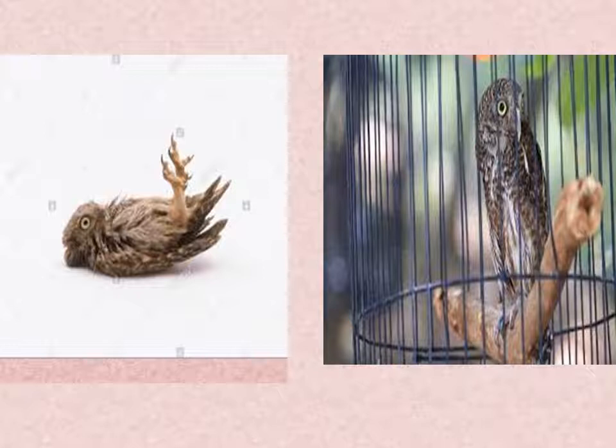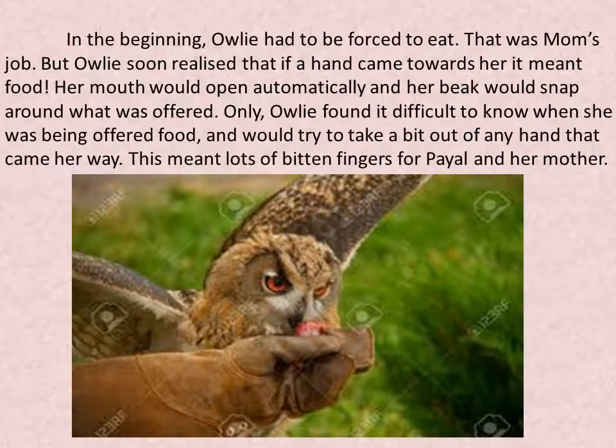In the beginning, Owly had to be forced to eat — that was mom's job. But Owly soon realized that if a hand came towards her, it meant food. Her mouth would open automatically and her beak would snap around what was offered. Only Owly found it difficult to know when she was being offered food and would try to take a bite out of any hand that came her way.